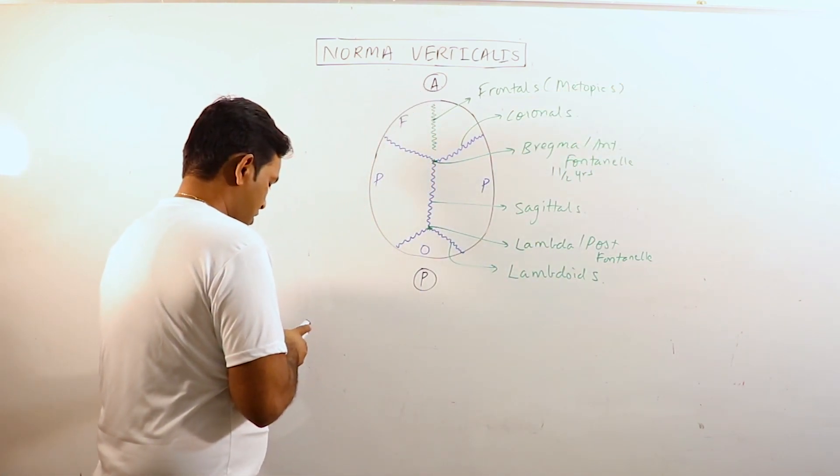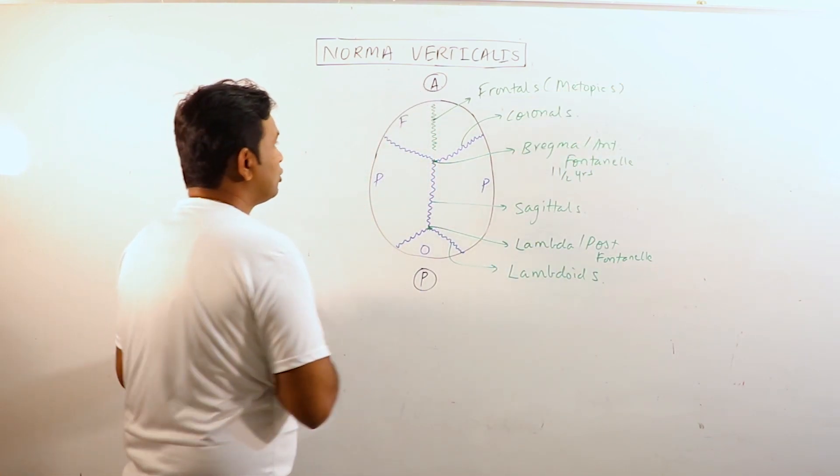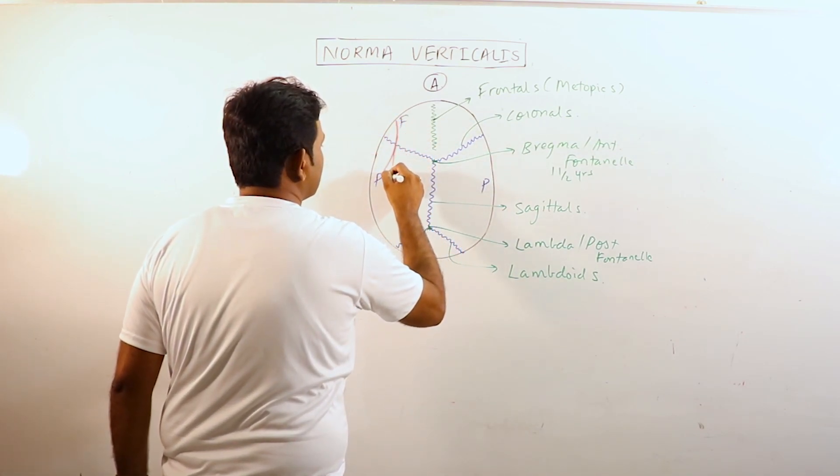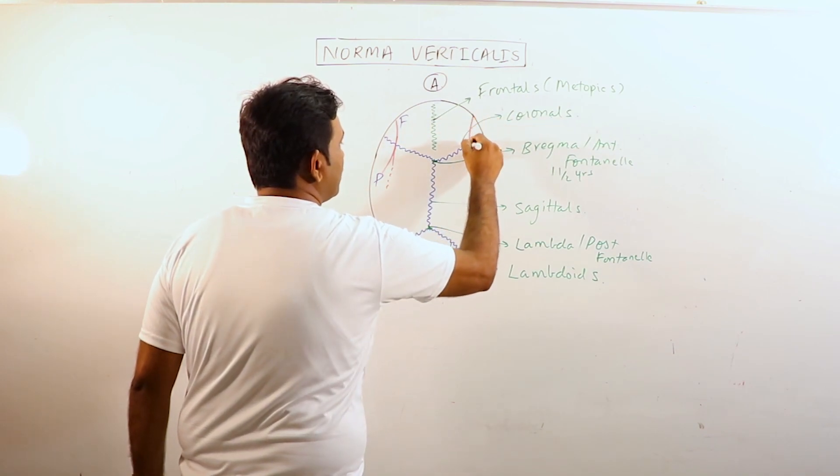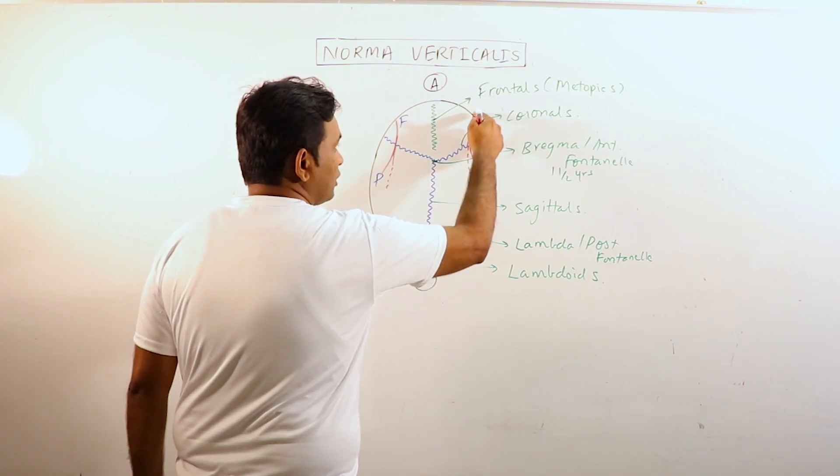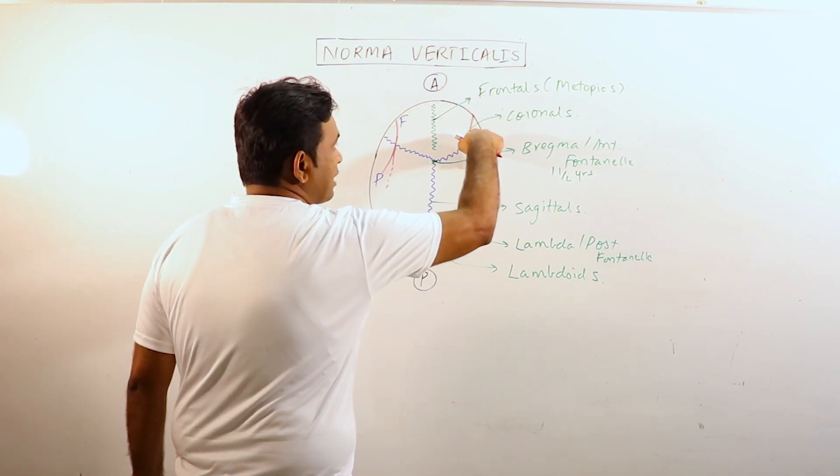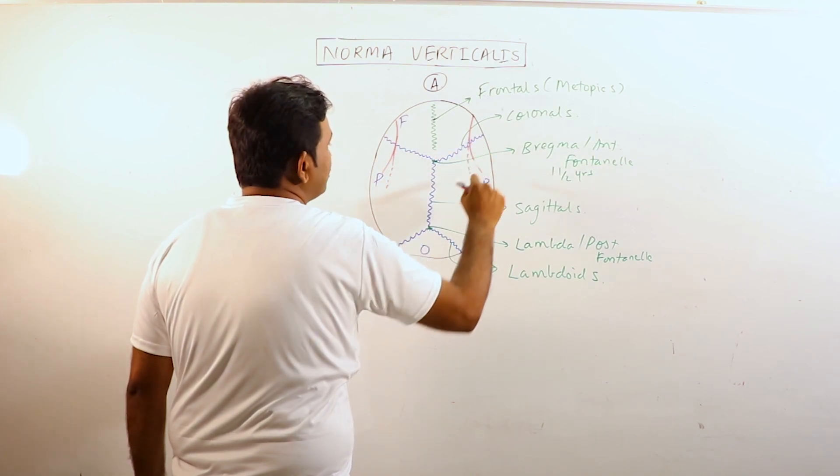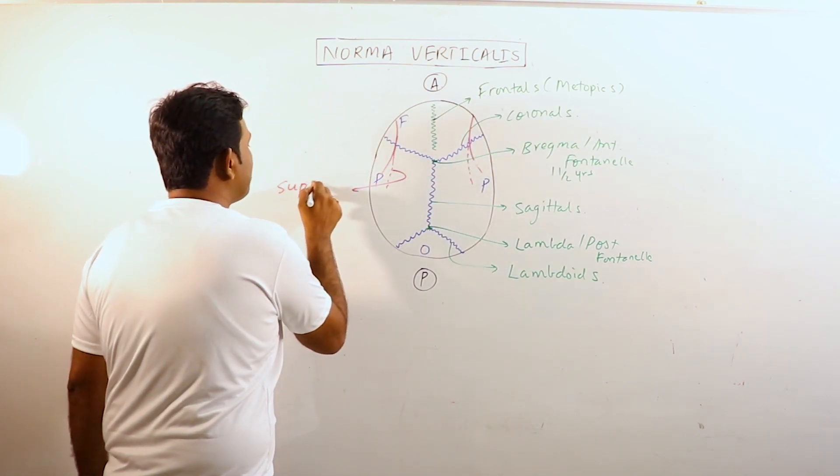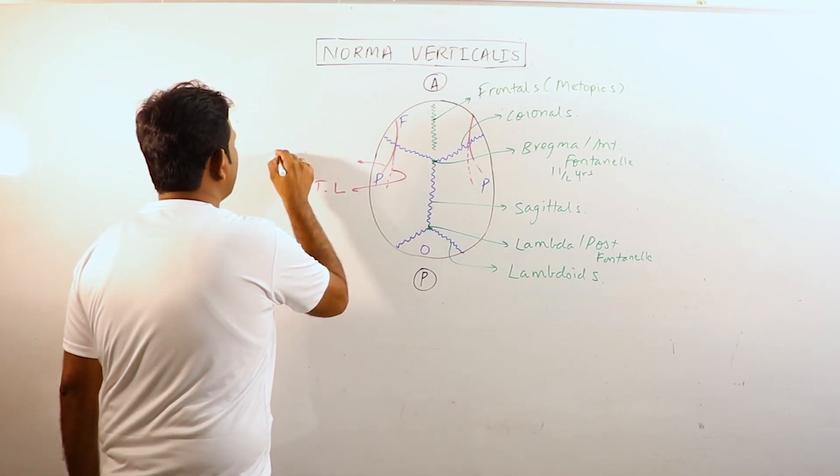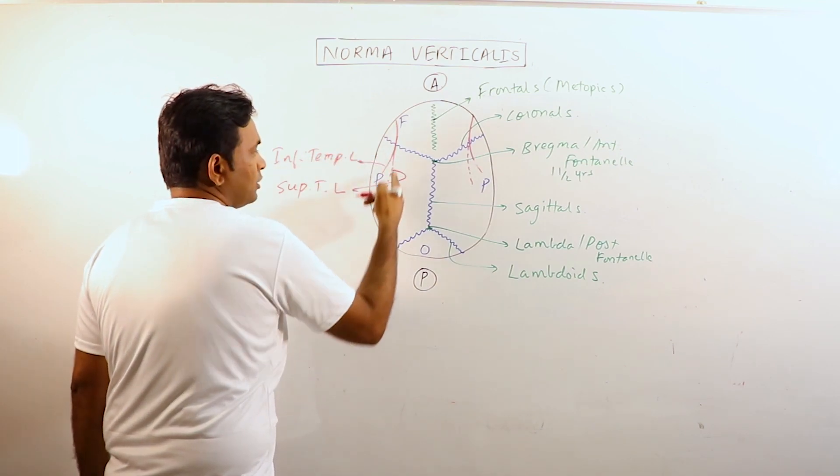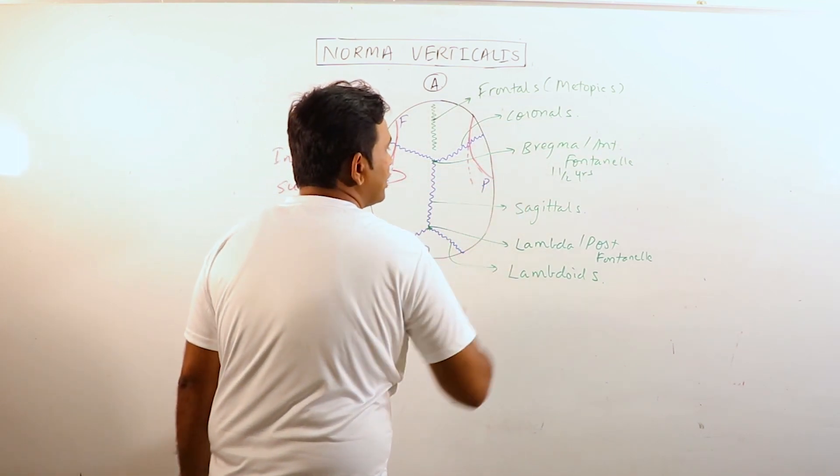Now, in this view, we can also observe the temporal lines. What are temporal lines? These actually originate from the zygomatic process of the frontal bone. They arch upwards and backwards then they cross the coronal suture and divide into two lines. The upper line is known as superior temporal line, while the lower one is known as inferior temporal line. The superior one fades away while the inferior continues.